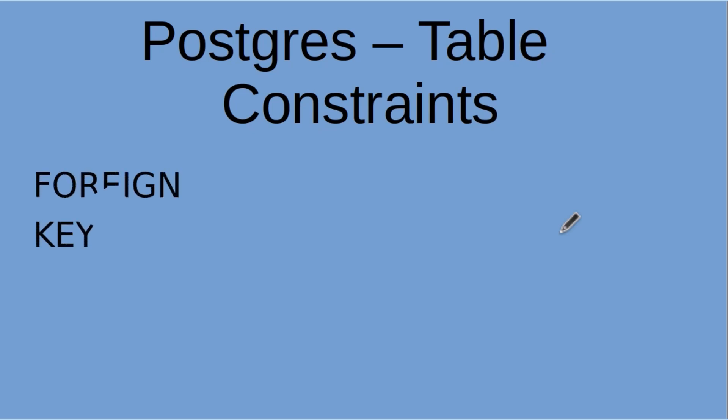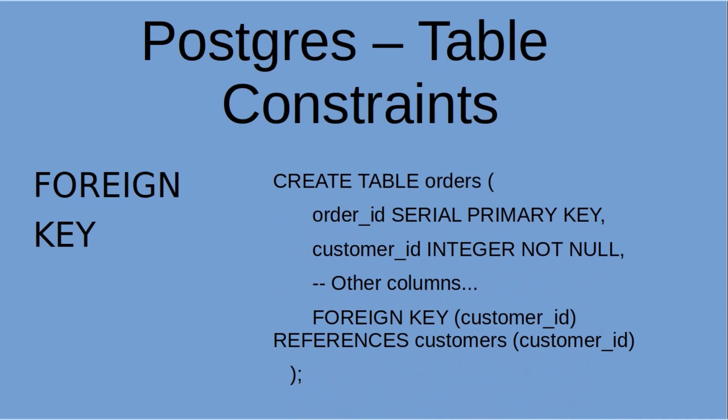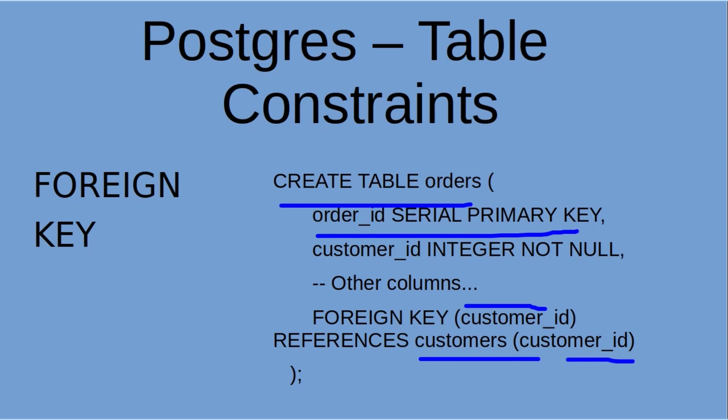The FOREIGN KEY establishes a relationship between the current table and the referenced table. It ensures that values in a specified column match values in the referenced table's column. Here we have the table 'orders' with a SERIAL primary key, and we see that it's referencing a table called 'customers' and a customer ID column, indicating the foreign key.